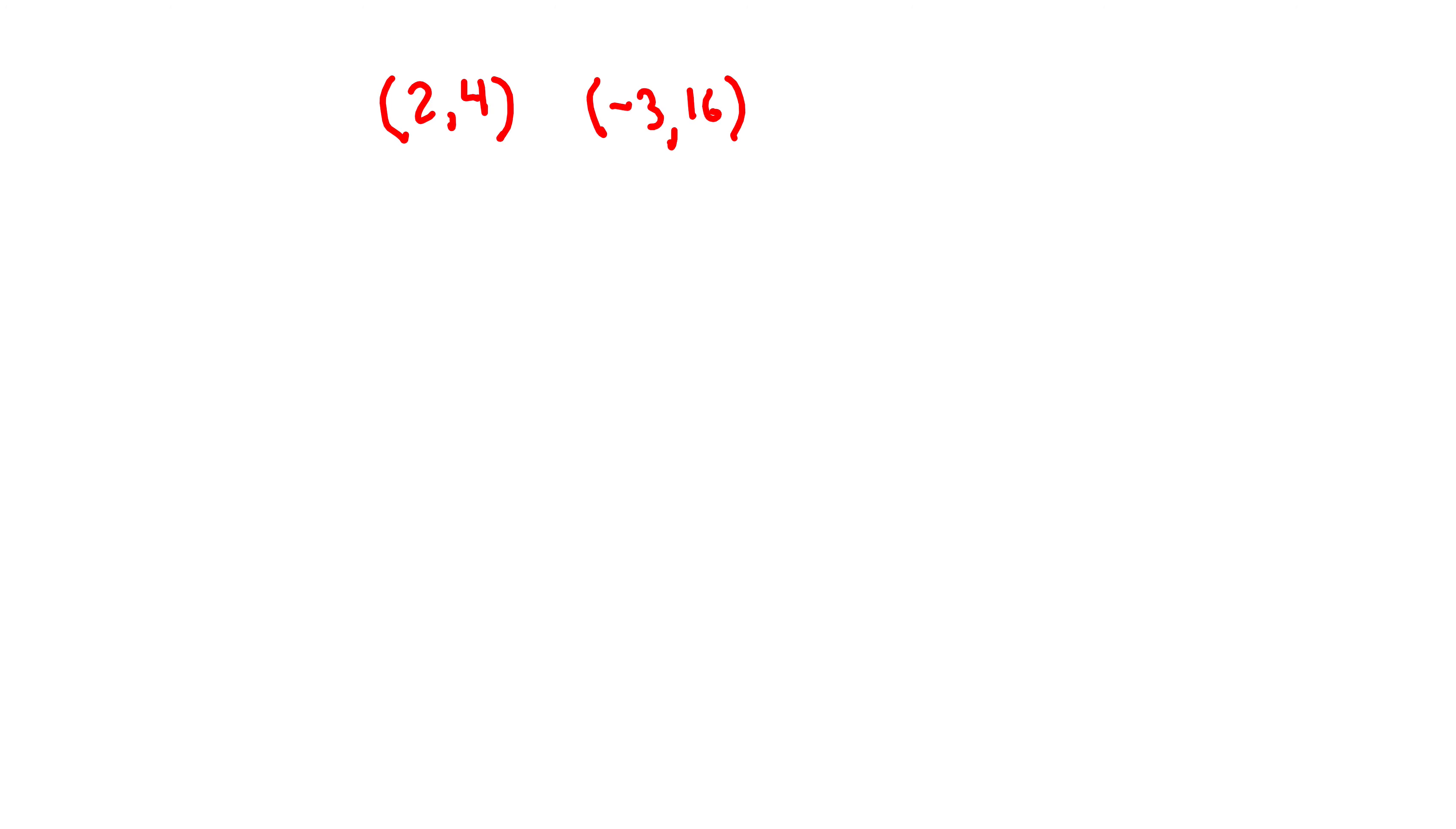So first things first, there is that fun formula, M for slope, right, because that makes a lot of sense. It's y1 minus y2 over x1 minus x2.